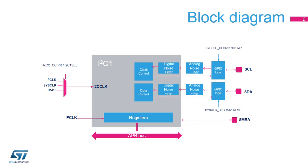Here is the I2C1 block diagram, which supports independent clock. The registers are accessed through the APB bus, and the peripheral is clocked with the I2C clock, which is independent from the APB clock. The I2C clock can be selected from among the APB clock, system clock, and the high-speed internal 16 MHz RC oscillator. Analog and digital noise filters are present on the SCL and SDA lines, and a 20 mA driving capability is enabled using the control bits in the system configuration registers. An SMBus alert pin is also available in SMBus mode.